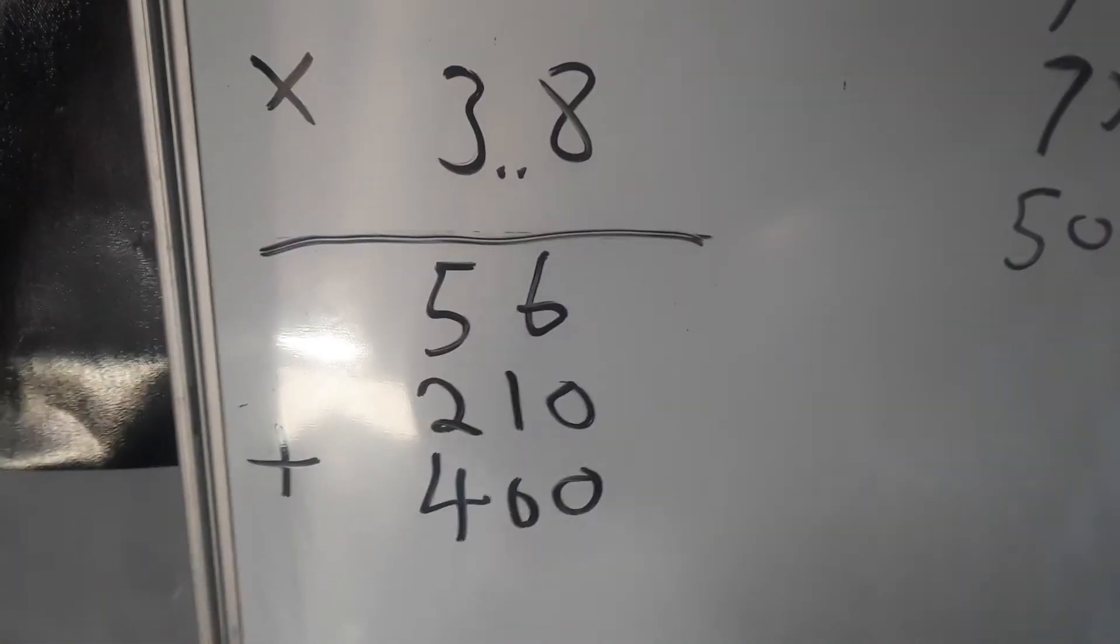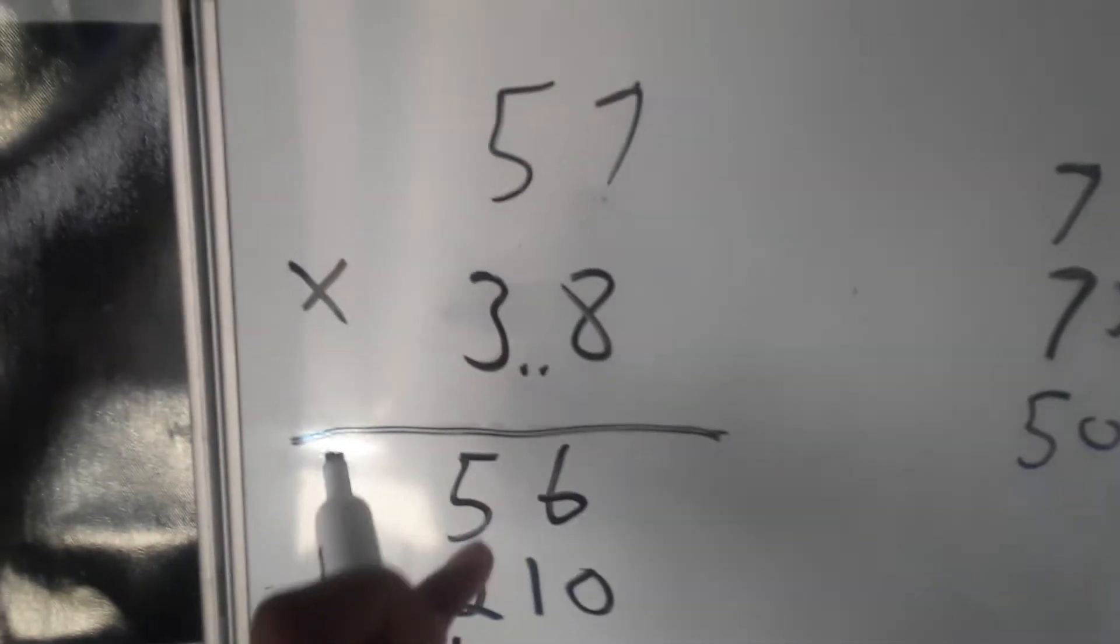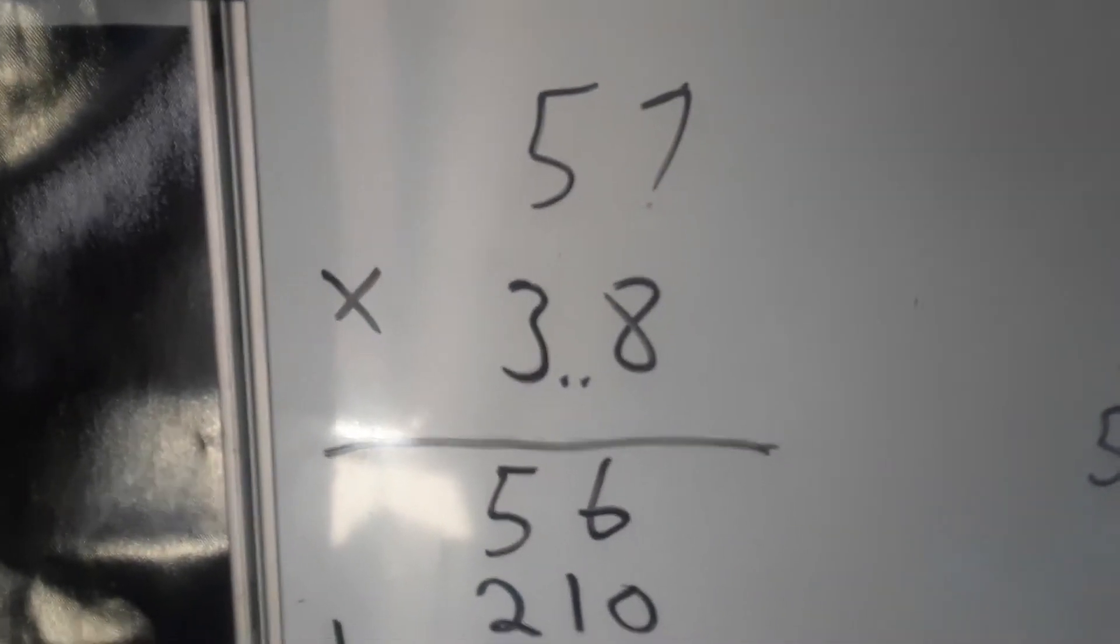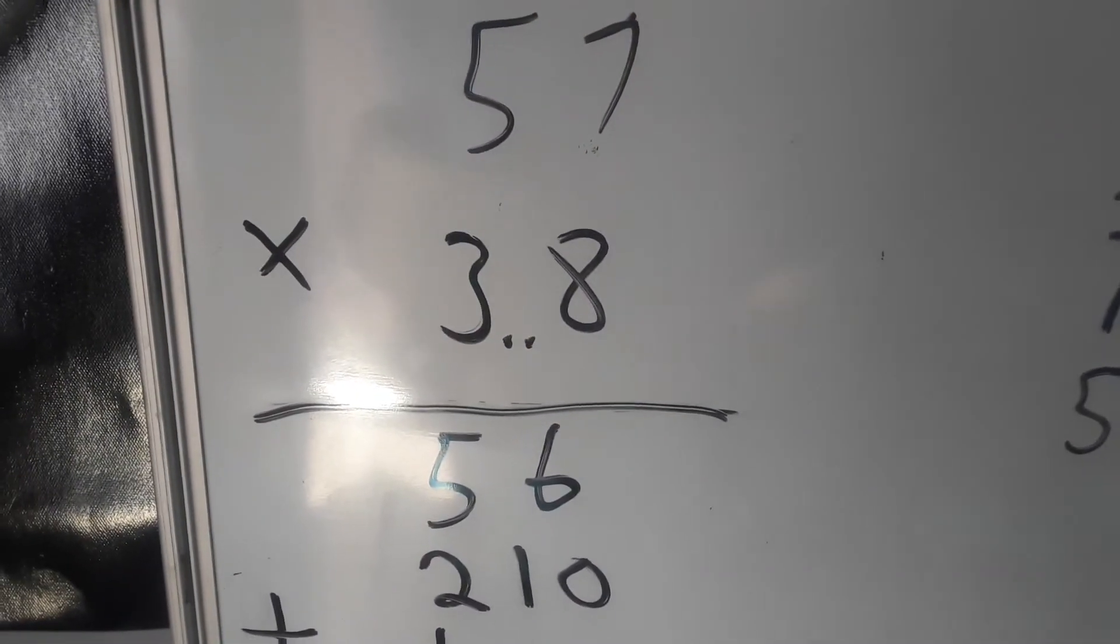After having done that, we're gonna add all of these numbers and get the total. So the total will give us 57 times 38. Then the next step that we want to do is breaking this thing down.